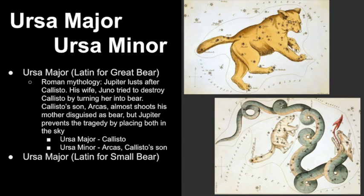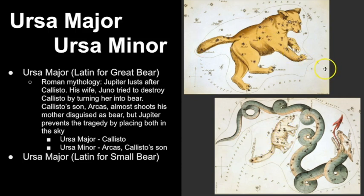Callisto's son Arcus almost shoots his mother because she's disguised as a bear — he was a hunter. But Jupiter was able to prevent the tragedy by placing them both in the sky. Ursa Major is represented by Callisto in Roman mythology, and Arcus is the son of Callisto. You can see their shapes and sizes are different.